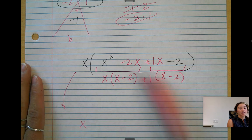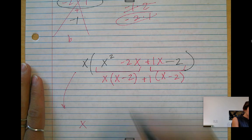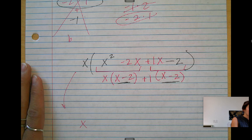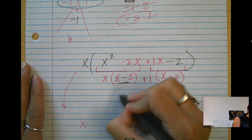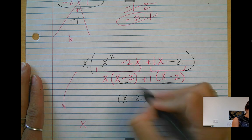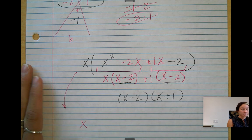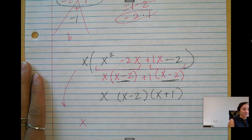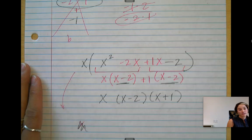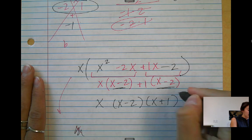Those are the same, which means we did it right. So we're pulling out an x minus 2. And then we have x plus 1. So this is fully factored. Done.